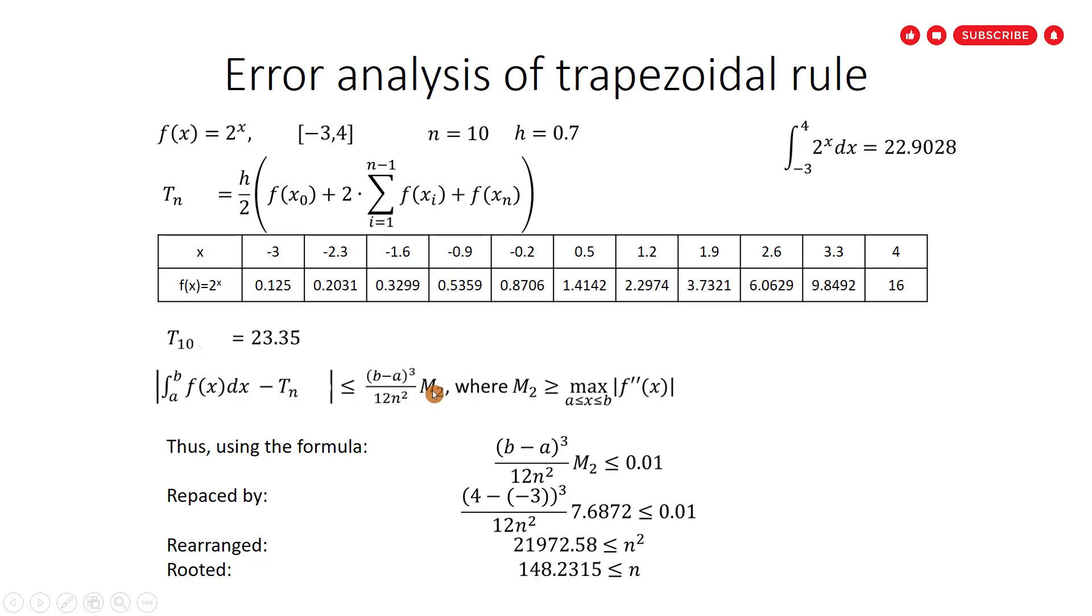Using the formula for preliminary error, we get the number of subintervals. That is the formula. Just replace by the values: b equals 4 minus a, a equals minus 3. So (4 minus minus 3)^3 over 12n^2 multiply M2, which M2 equals 7.6872, should be smaller or equal to the error, which is 0.01.